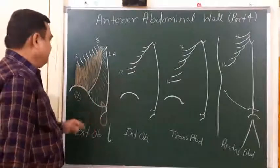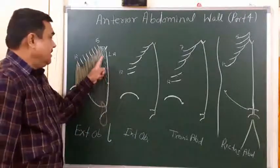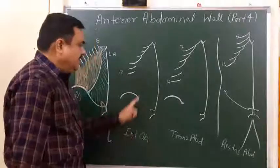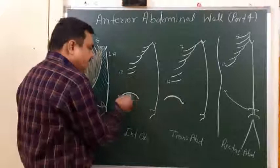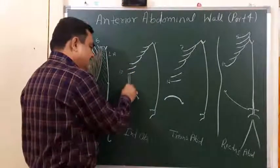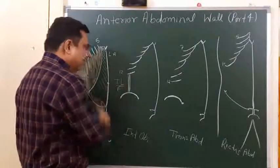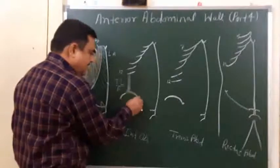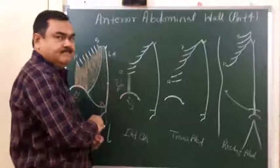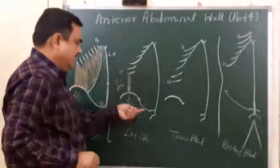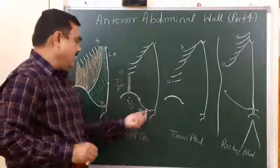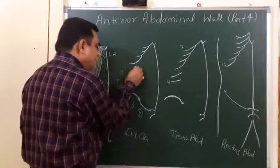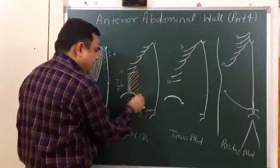So these are two important features of external oblique: one is the inguinal ligament and the other is the external spermatic fascia. Nerve supply of this muscle is from T7 to T12 and L1. Another muscle is the internal oblique. It takes origin from the thoracolumbar fascia, the anterior two-thirds of the intermediate area of the iliac crest, and the lateral two-thirds of the inguinal ligament. The direction of the fibers is upward, forward, and medially.